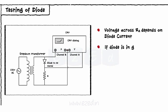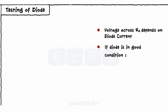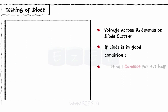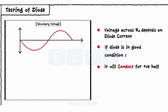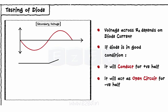The input applied to the transformer is an AC voltage. If the diode is in good condition, it will conduct for the positive half of the secondary voltage and should act as an open circuit for the negative half of the secondary voltage. It conducts for a positive cycle only and gives zero output for the negative cycle of the secondary voltage.